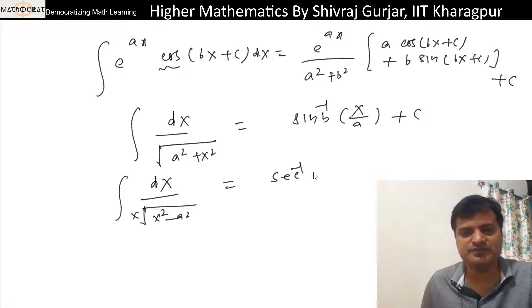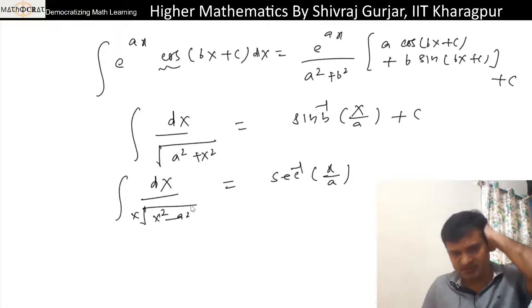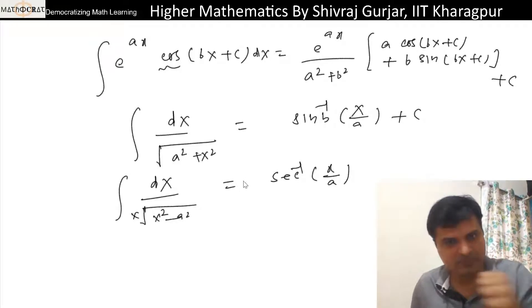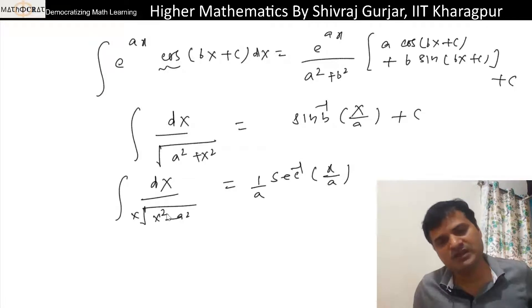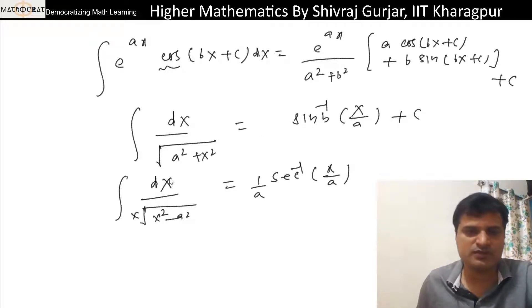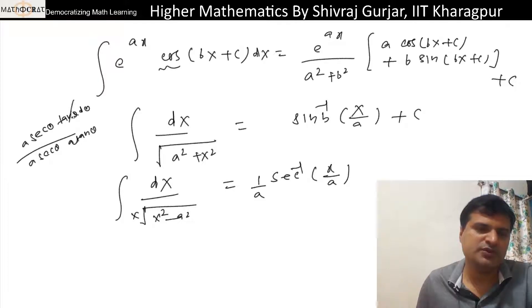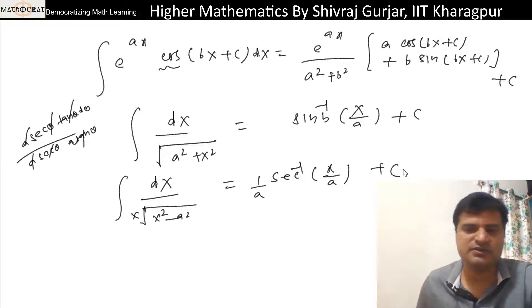For integral of dx divided by root x square minus a square, if we put x equals a sec theta, dx becomes a sec theta tan theta d theta. Everything will cancel out, one a will remain. So this will be the answer: one by a.